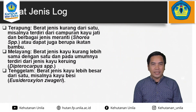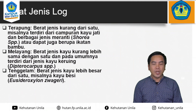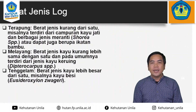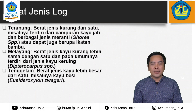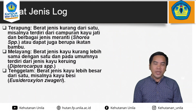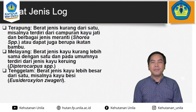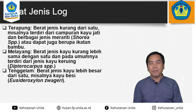Kayu yang memiliki berat jenis sama dengan satu akan melayang di dalam perairan, tidak tenggelam tetapi tidak juga terapung — contohnya adalah kayu keruing (Dipterocarpus spp.). Kayu ini apabila ingin dirakit harus dikombinasikan dengan kayu yang berat jenisnya kurang dari satu. Ada juga kayu yang berat jenisnya lebih dari satu yang akan tenggelam, contohnya kayu besi atau ulin, yang harus diikat bersama kayu-kayu berat jenis kurang dari satu agar rakit tetap mengapung.